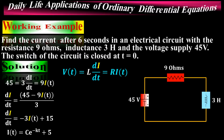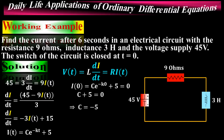To find the constant C, apply the initial condition: at t equals zero, the current I is zero. Substituting t equals zero and I equals zero into the general solution and simplifying gives C equals negative 5.